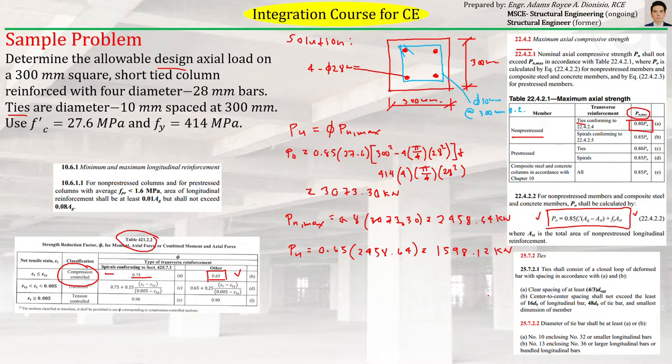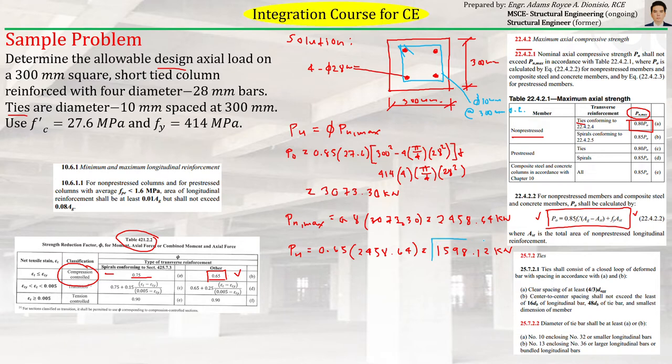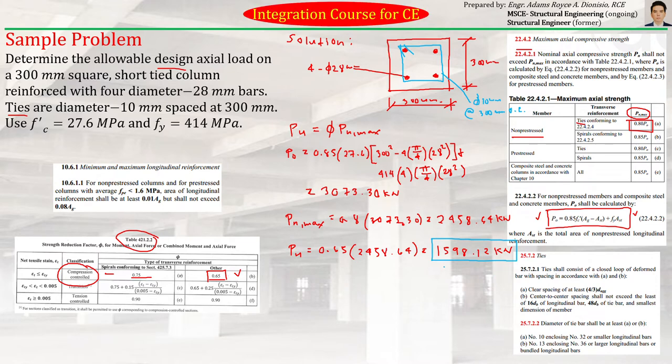So it will be 1,598.12 kilonewtons. So basically that's the maximum or the allowable design actual load that our given column can withstand. And that is already the answer for this particular problem. So let's box it to make it final.